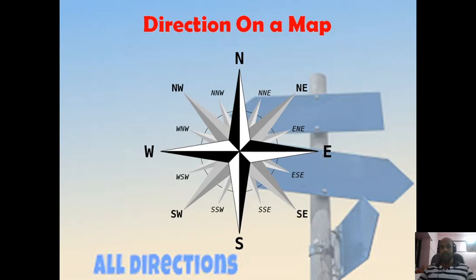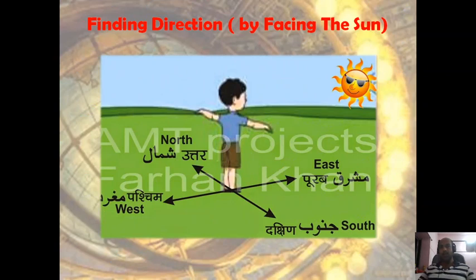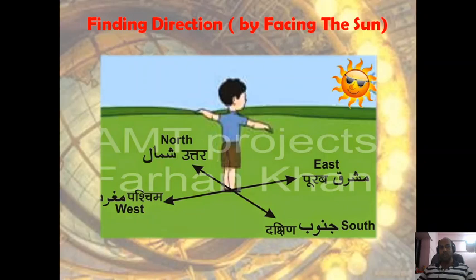Directions are represented by capital English letters. To find direction, if you get up early in the morning when the sun is rising and face the sun, you can find directions easily — because the sun rises from the east. When you are facing east, your back is west, your left hand side is north, and your right hand side is south.